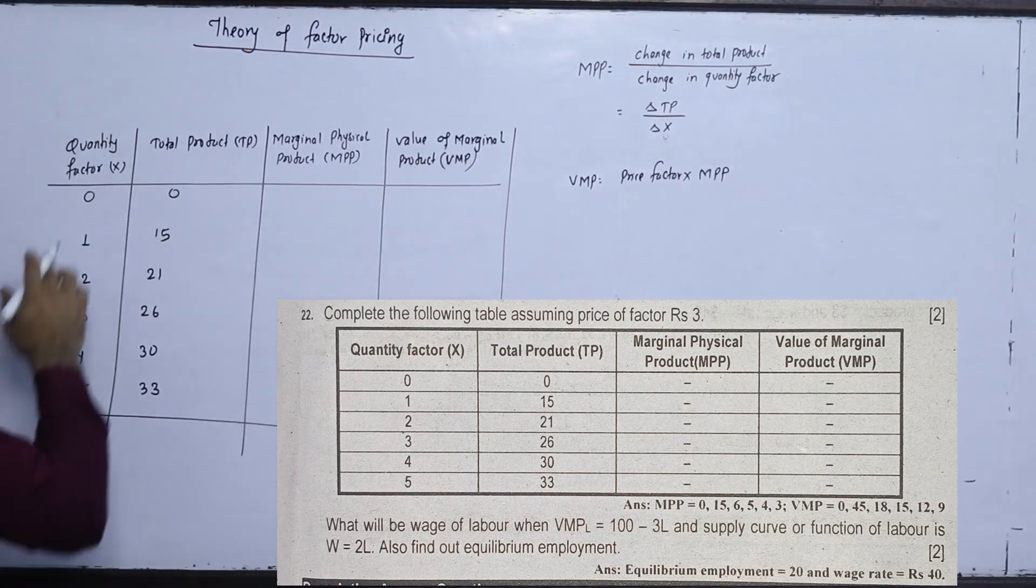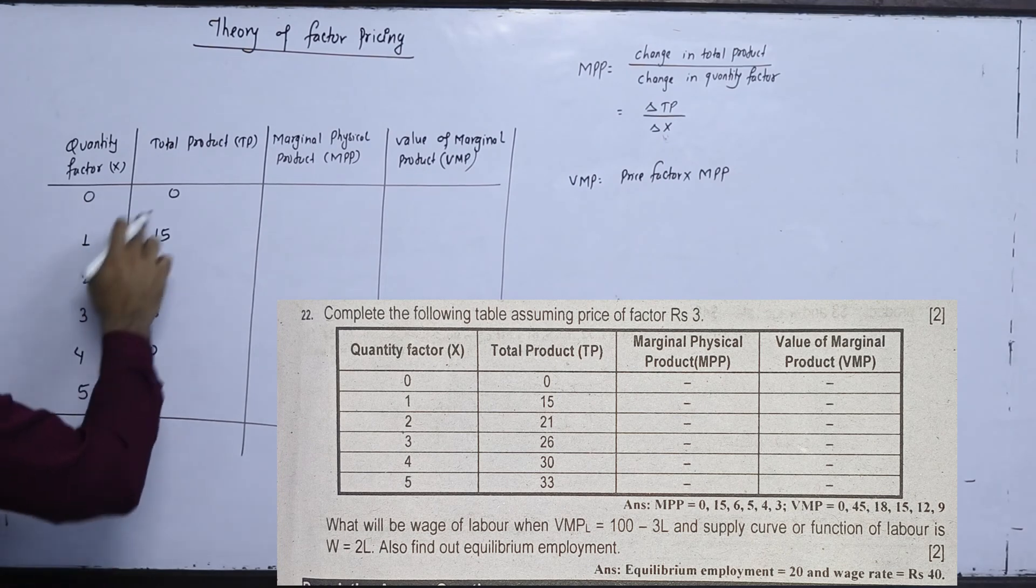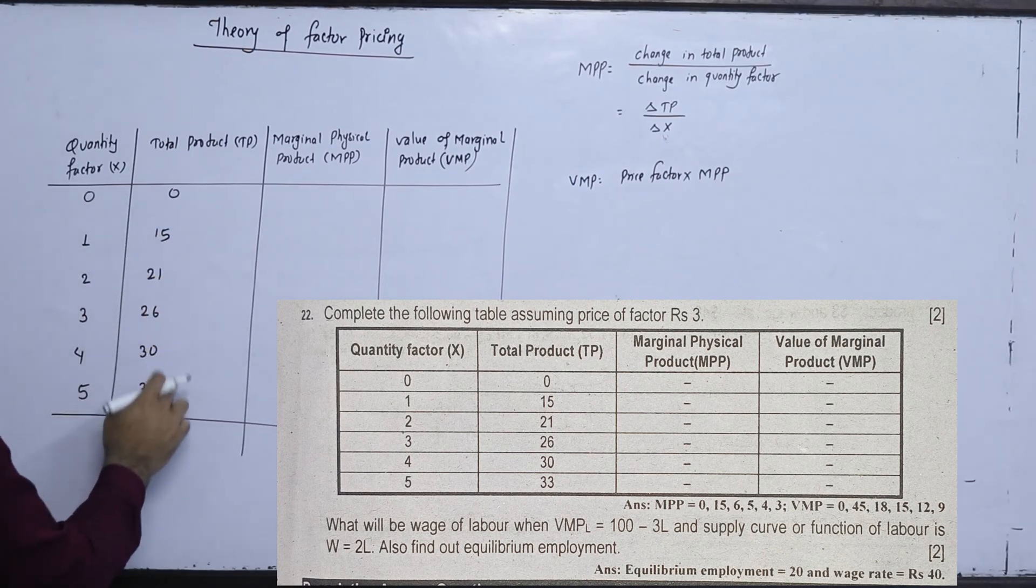The quantity factor reacts with 0, 1, 2, 3, 4, 5, 7. The total product is 0, 15, 21, 26, 30, 33.